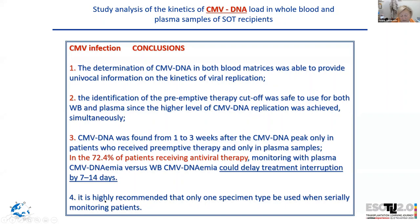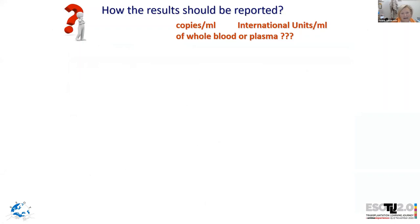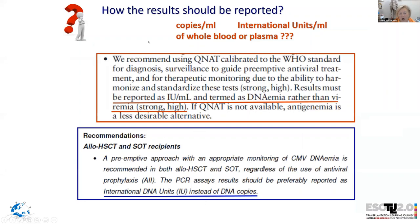An important recommendation from all international consensus documents is that it is highly recommended that only one specimen type be used when serially monitoring patients. Now let's analyze how results should be reported — copies or international units.